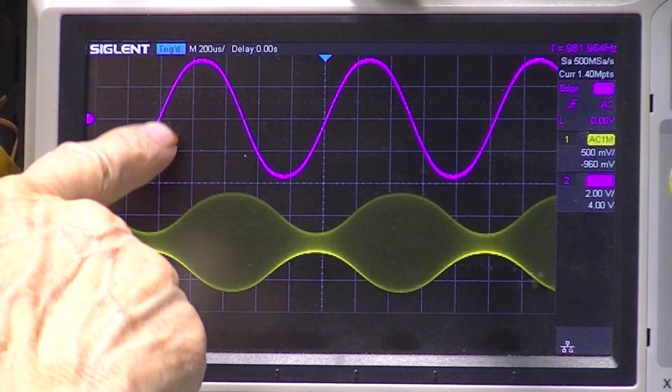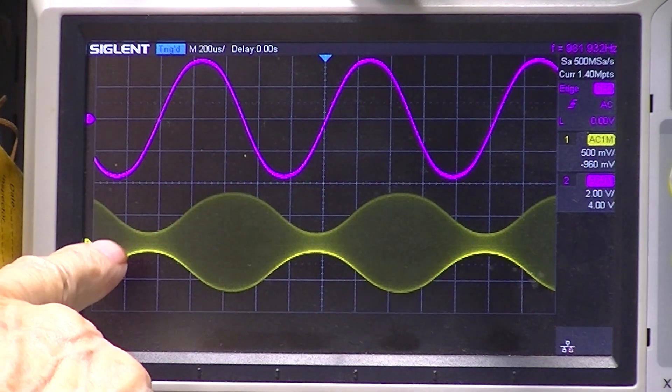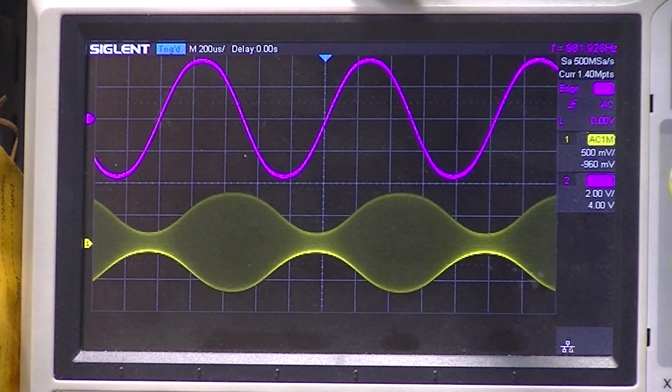So this is the function generator. This is the AM modulated output signal.